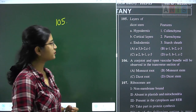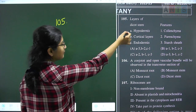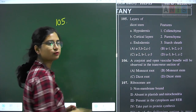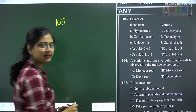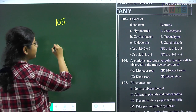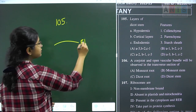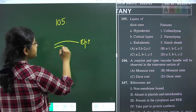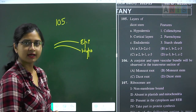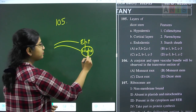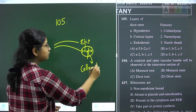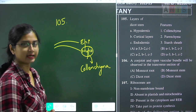Question 105 is from the anatomy chapter. We have to match dicot stem layers with their features. Hypodermis is the layer present just below the epidermis — the outermost layer. In the dicot stem, the hypodermis is composed of collenchyma. Just below the hypodermis is the cortex, whose cortical cells are made up of parenchyma.